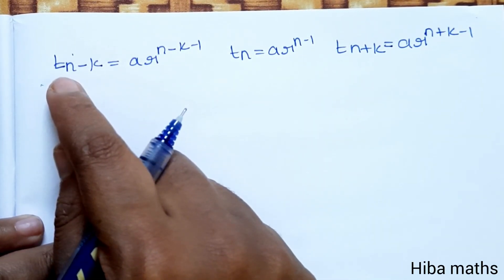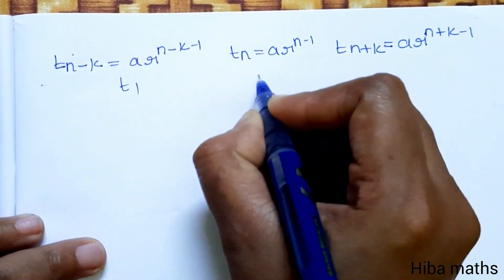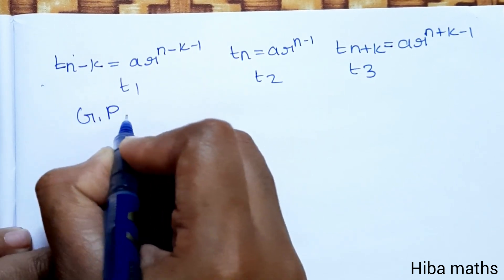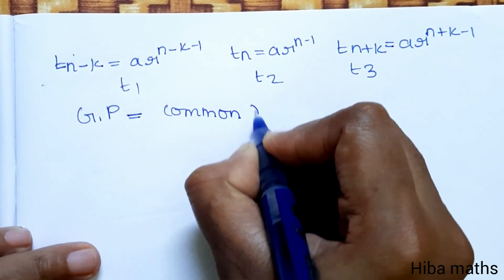We have the question: t_{n-k}, t_n, t_{n+k} are T1, T2, T3. Now for GP, we have common ratio.